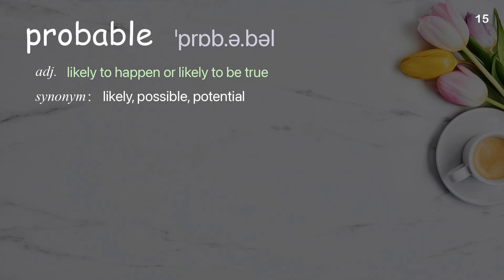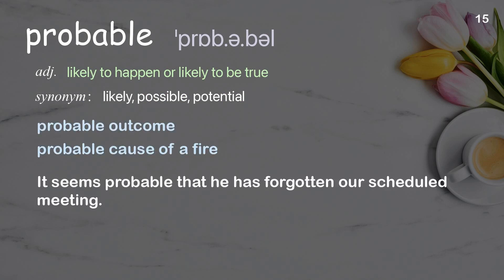Probable: Likely to happen or likely to be true. Examples: Probable outcome. Probable cause of a fire. It seems probable that he has forgotten our scheduled meeting.